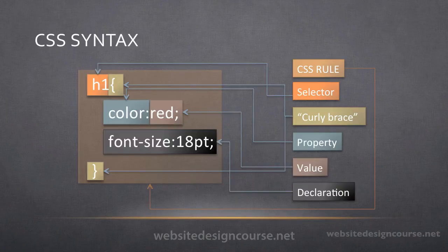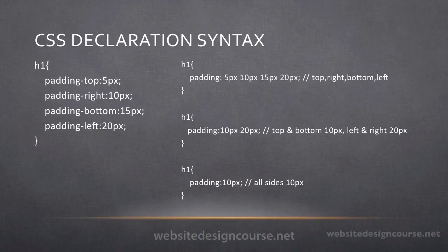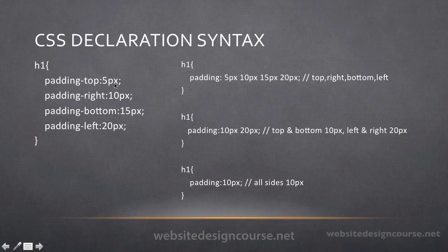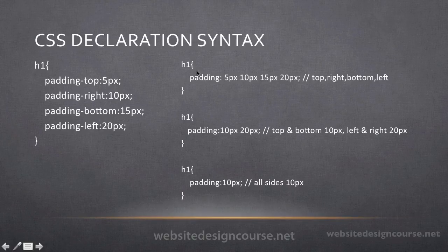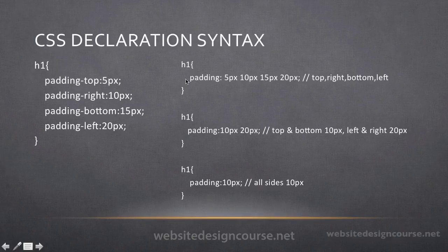On this next slide we're going to look at the different types of syntax for the actual declarations themselves, as they can vary between longhand and shorthand. On the left, this rule for the header one tag shows what we call longhand declaration. The header one has a property of padding-top with a value of 5 pixels, then padding-right, padding-bottom, and padding-left — each one separated. However, there's an easier way to write this. Using shorthand, we can write just 'padding' with four values: top, right, bottom, and left, which is much more succinct and compact.